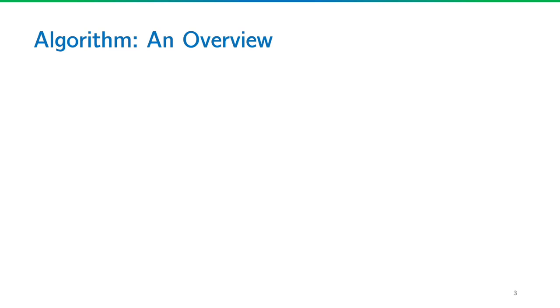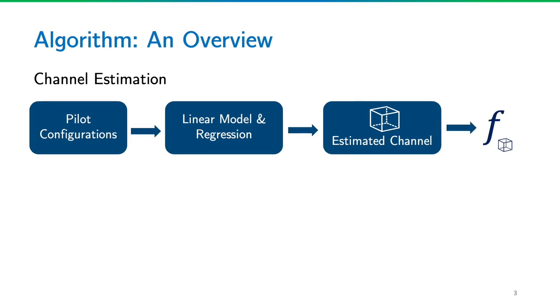This is the high-level view of our solution. For the first sub-problem, which is channel estimation, we use the pilot configurations in the data sets. Then, we use a linear model to characterize the system and use multivariate multiple regression to estimate the channel. The estimated channel defines a mapping f from any IRS configuration to the received data rate.